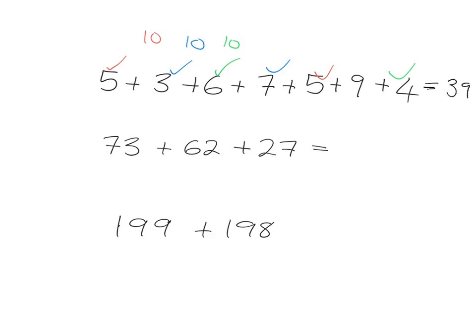Similarly, if I really get good at my bonds to 100, I can immediately in this one see that instead of just adding from left to right, if I go 73 and 27, that makes 100, so the total will be 162.